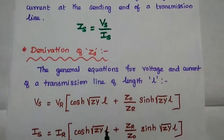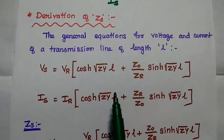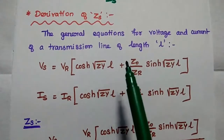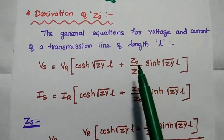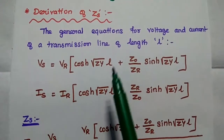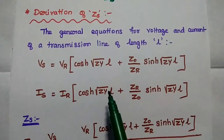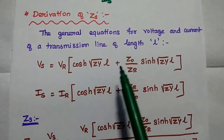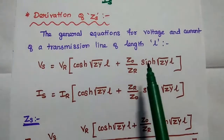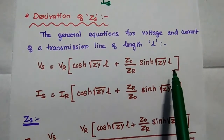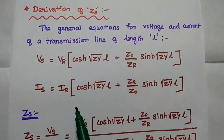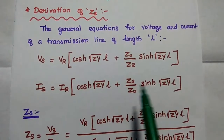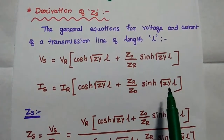We are going to derive the input impedance of the transmission line. We have already derived the general equations for the voltage and current of a transmission line in the previous lecture video. Here we are going to use those equations directly. Sending end voltage Vs is equal to Vr cosh(√ZY · L) plus Z0 divided by Zr times sinh(√ZY · L), and the sending end current Is is equal to Ir cosh(√ZY · L) plus Zr divided by Z0 times sinh(√ZY · L).